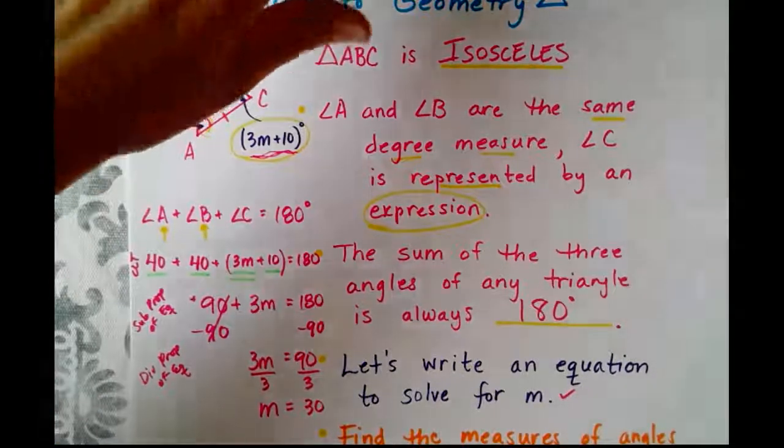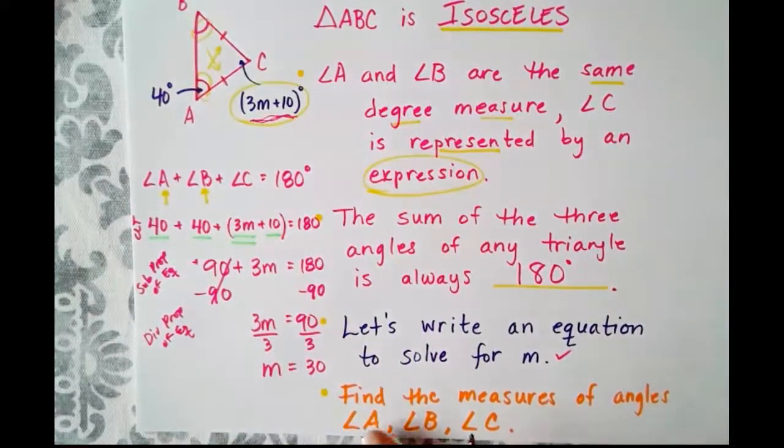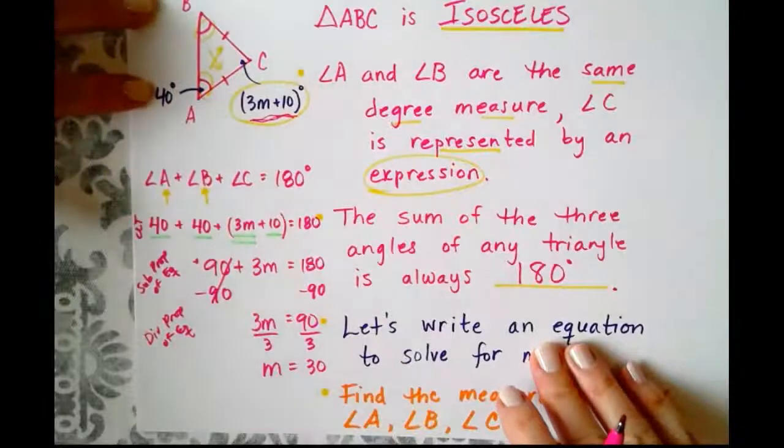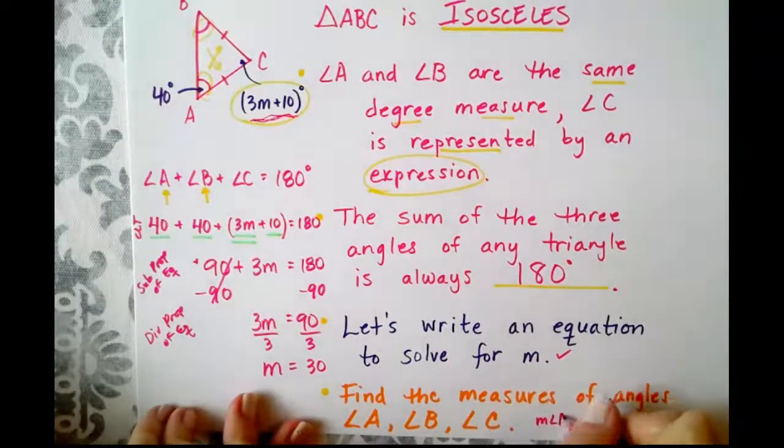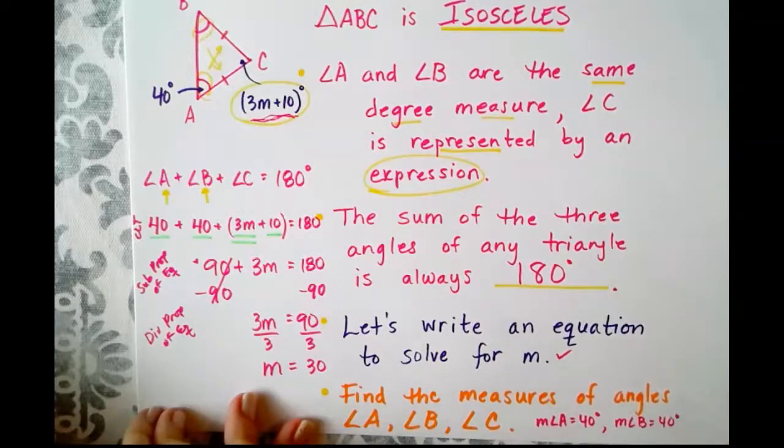Are we done? Not quite. Because we've got one last task. It says find the measures of angles A, B, and C. Well, we know the measures of angle A and angle B. They're both 40. So the measure of angle A equals 40. The measure of angle B also equals 40.